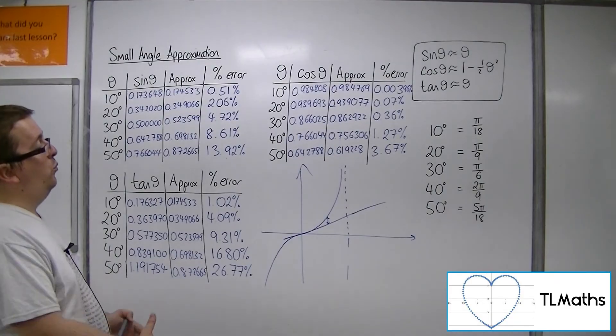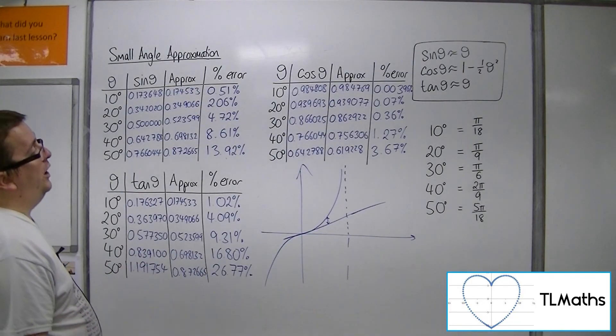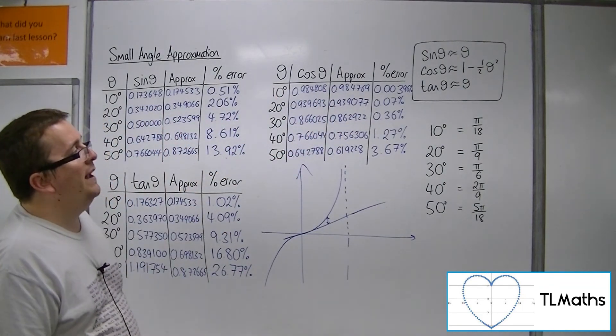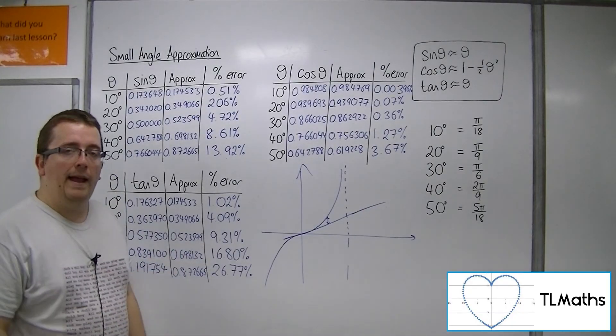So, that is why these percentage errors are going to be different, and why the cosine curve is going to be matched better by its small angle approximation for larger angles than sine or tan.